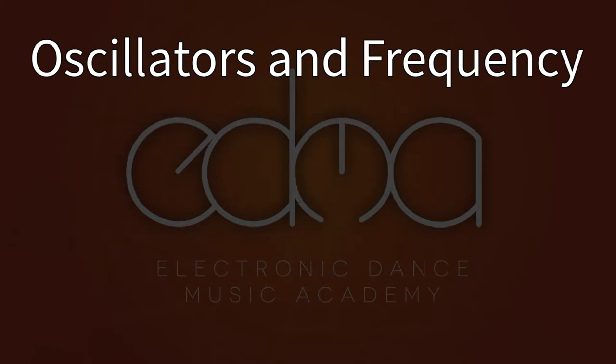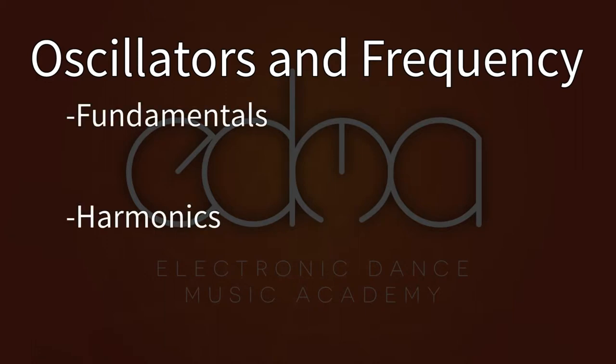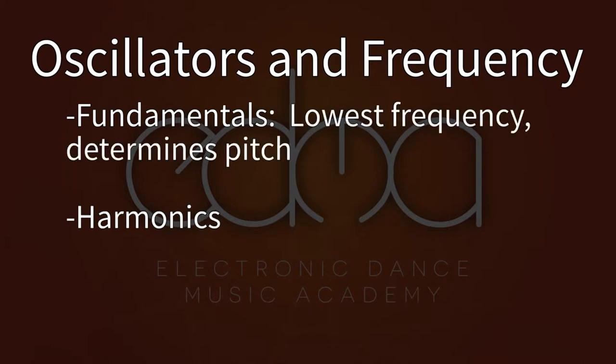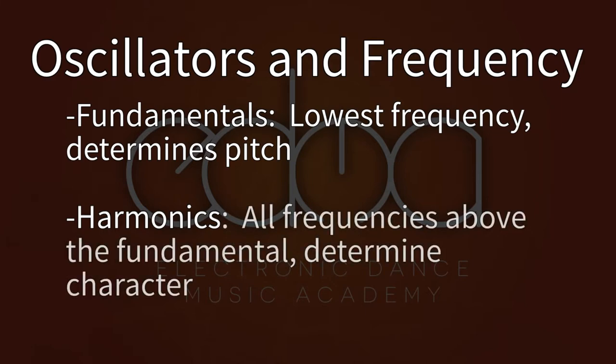All natural sounds are made up of thousands of different frequencies, and these are broken down into fundamentals and harmonics. A fundamental frequency is typically the lowest frequency in a sound and is what determines an instrument's perceived pitch. The frequencies above the fundamental are the harmonics, and these make up the character of the sound and help us identify what type of sound or instrument we hear.